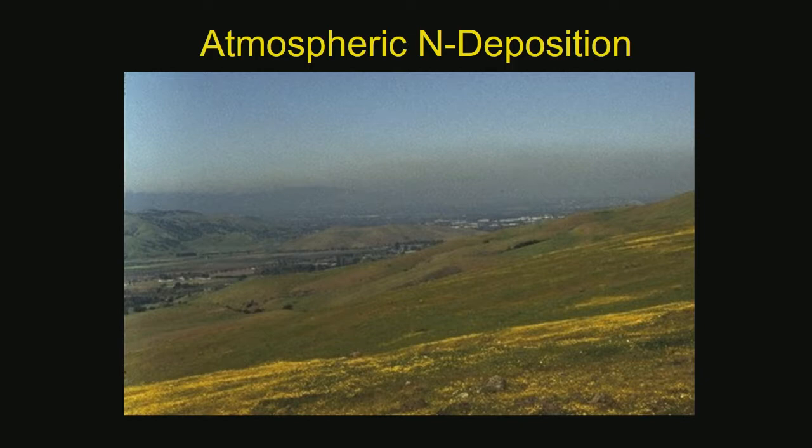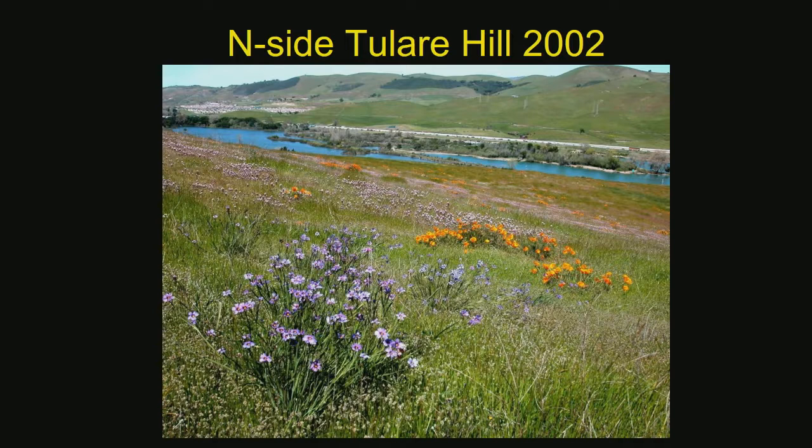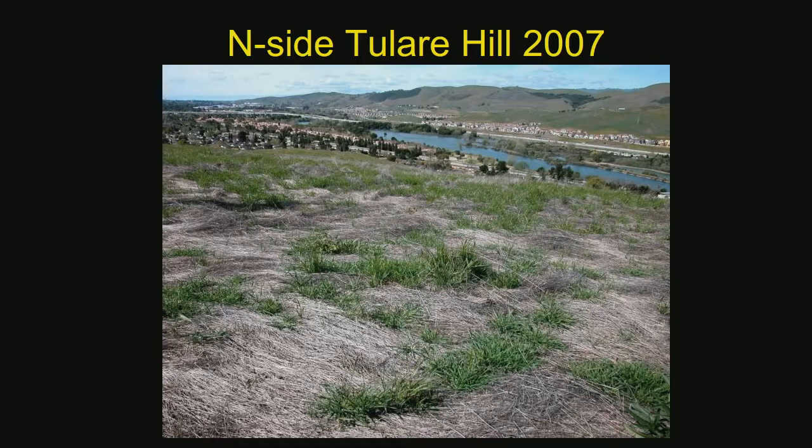We're at the south end and the prevailing winds tend to be from the northwest, and it's an ongoing problem. In 2002, this is a site on Tulare Hill, our most polluted site. And then a few years later, after the cows were pulled because of a dispute between adjacent landowners, that's what it looked like — we lost the biodiversity and were left with thatch and annual grass.